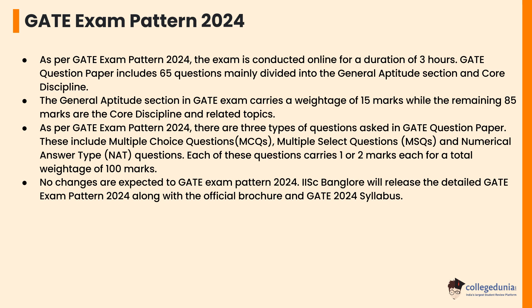The GATE question paper includes 65 questions, mainly divided into the General Aptitude section and core discipline. The General Aptitude section carries a weightage of 15 marks, while the remaining 85 marks are for core discipline and related topics. There are three types of questions: Multiple Choice Questions, Multiple Select Questions, and Numerical Answer Type Questions, each carrying one or two marks.